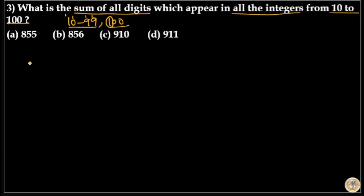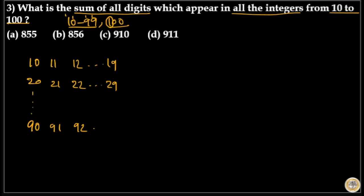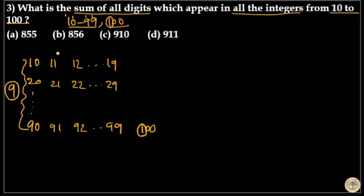I will write 10 to 99 in rows and columns: 10, 11, 12... up to 19; then 20, 21, 22... up to 29, repeating until 90, 91, 92... up to 99. In this table we have 9 rows and 10 columns — 9 columns for the non-zero unit digits and 1 additional column, making 10 columns total (column 1, column 2, column 3, etc.).